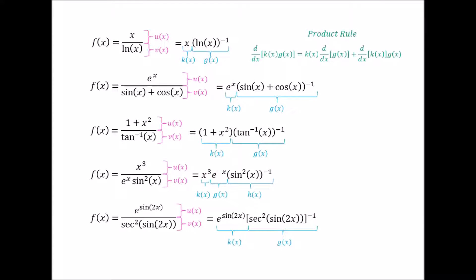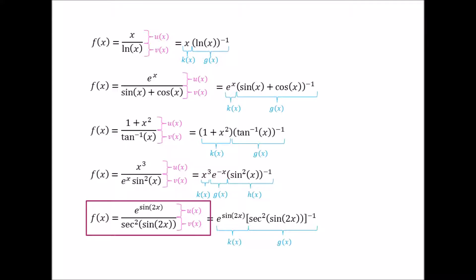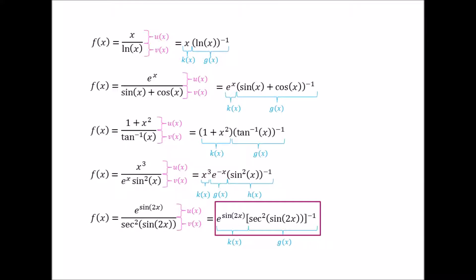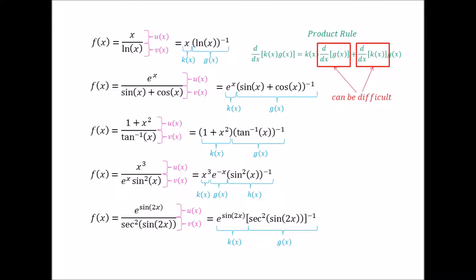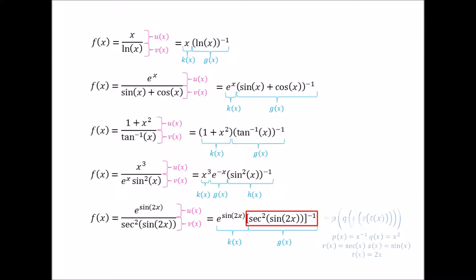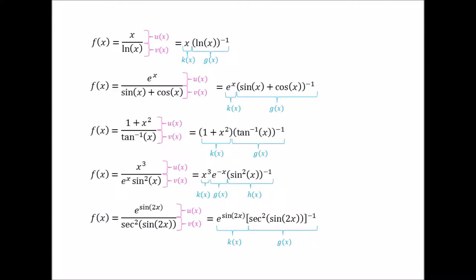And although that is true, it is also true that if you have an extremely complicated function — such as e to the sine of x over secant squared of sine of x in the denominator — then turning the denominator into a numerator raised to the negative one power and applying the product rule can become very troublesome and lengthy. Just look at secant squared of sine of x: it is clearly a composite of five functions, p of q of r of s of t of x, so finding its first derivative would require using the chain rule four times, which is just too much.